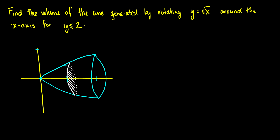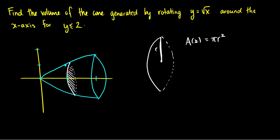We have to take the integral of the area, but the question is what is the area? Well, if we rotate around an axis, we just get a bunch of circles. If we take a look at this cross-section more in depth, we have a radius. The area of a circle is pi r squared. The radius is the distance from the x-axis to the curve — here we have y equals root x, so root x is our radius. So the area is pi times root x squared, which simplifies to pi x.